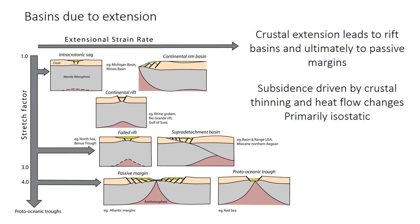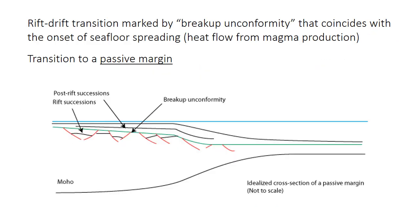In rift basins, the subsidence is driven primarily by isostasy, through a combination of crustal and lithospheric thinning and also by changes in heat flow. The extensional strain rate and the thickness of the lithosphere both play important roles in the subsidence. As you get increasing extension, there is this transition from a rift potentially to a passive margin — like the east coast of North America — where there's no active plate boundary. The transition between the rifting part and the passive margin part is generally called the rift-to-drift transition, approximately marking the shift from sedimentation in confined rift basins to more broadly distributed post-rift or passive margin sediments. That transition is often marked by something called a breakup unconformity, the green line in the diagram, which is related to the onset of seafloor spreading.